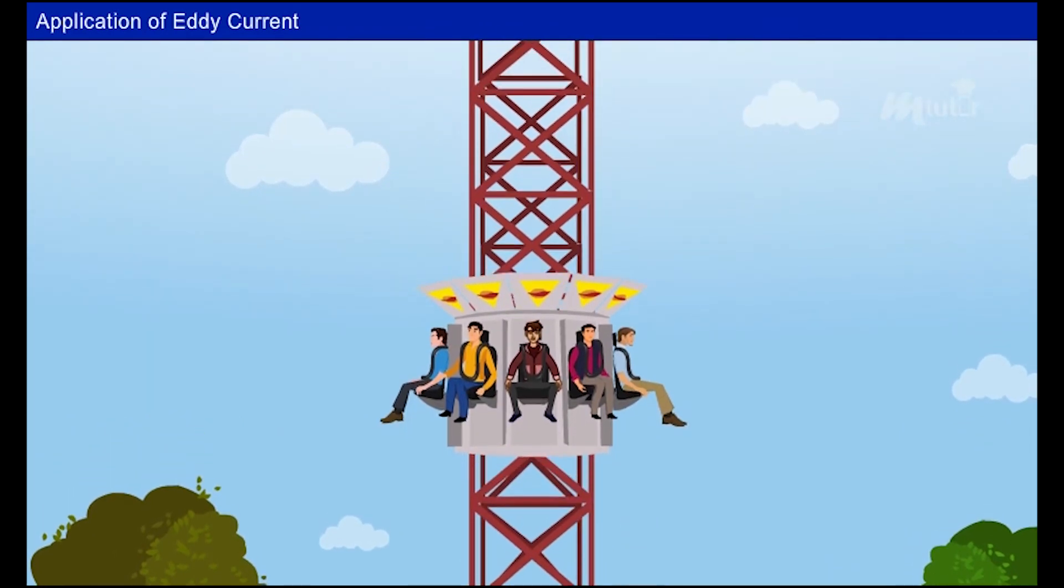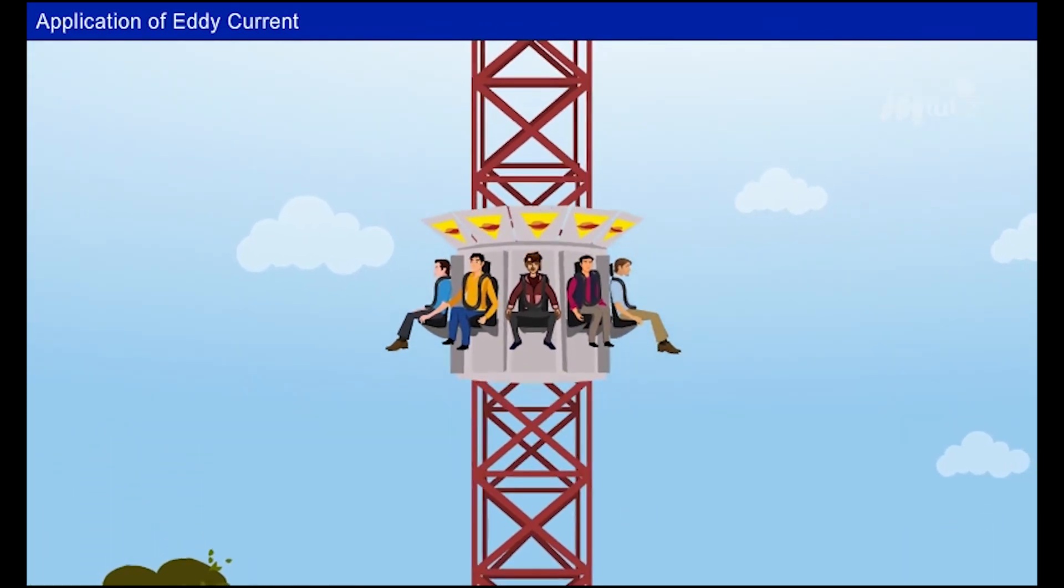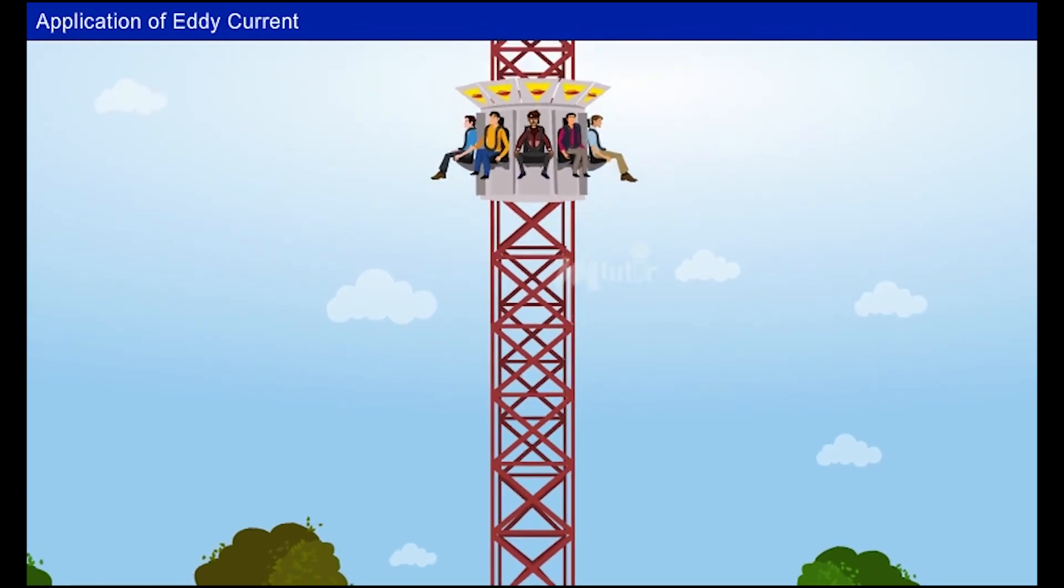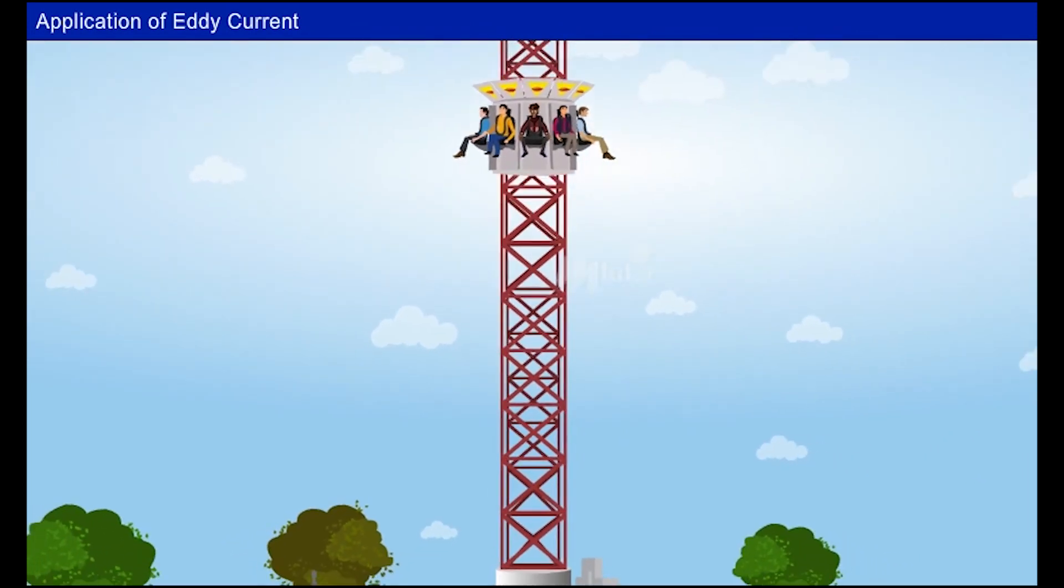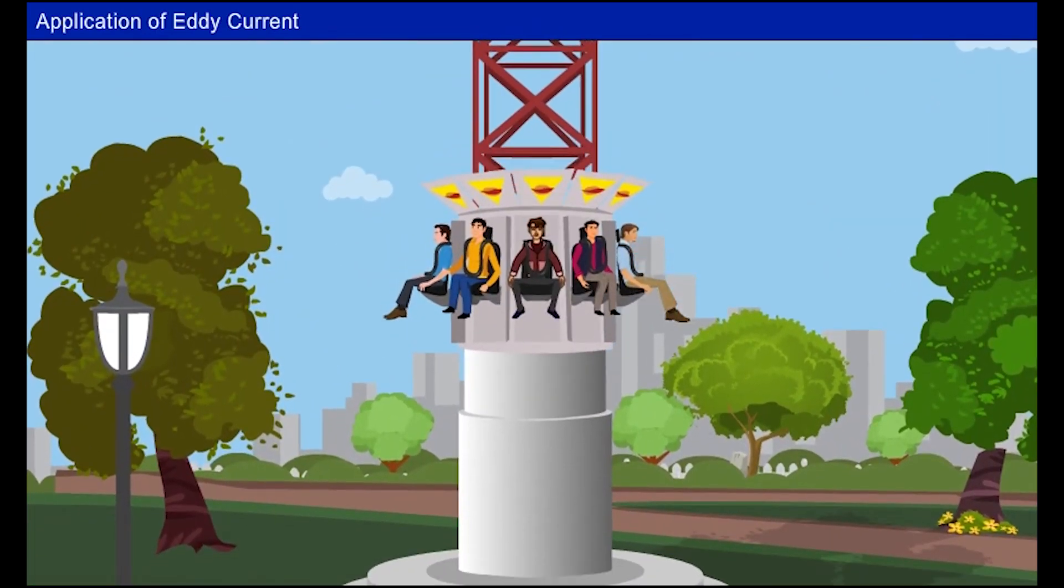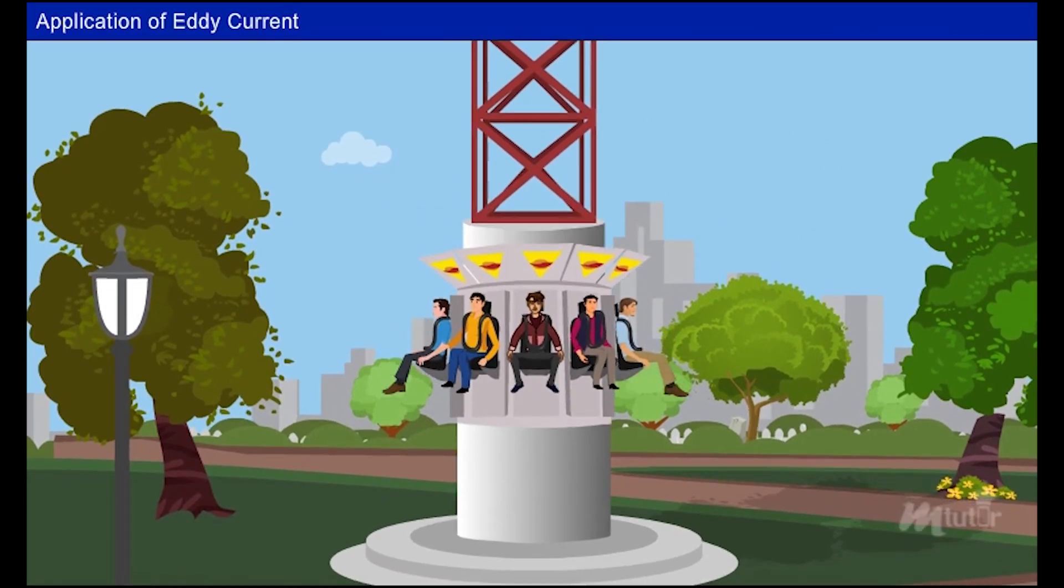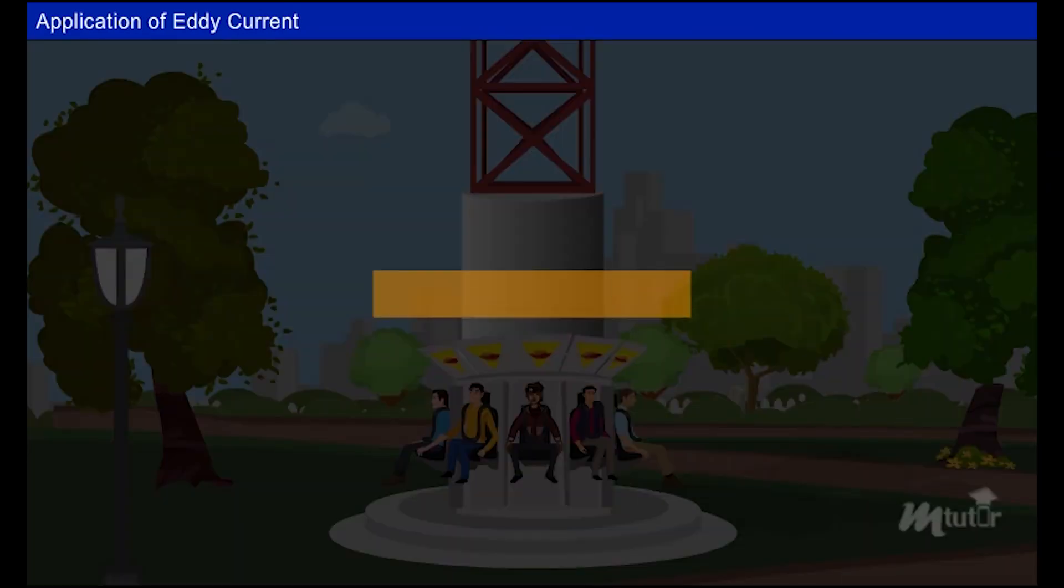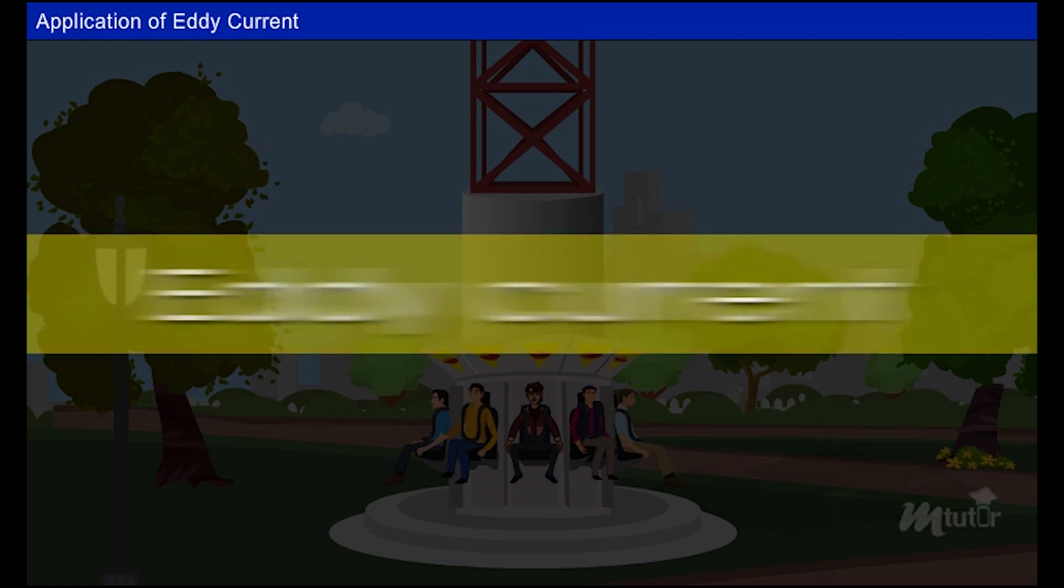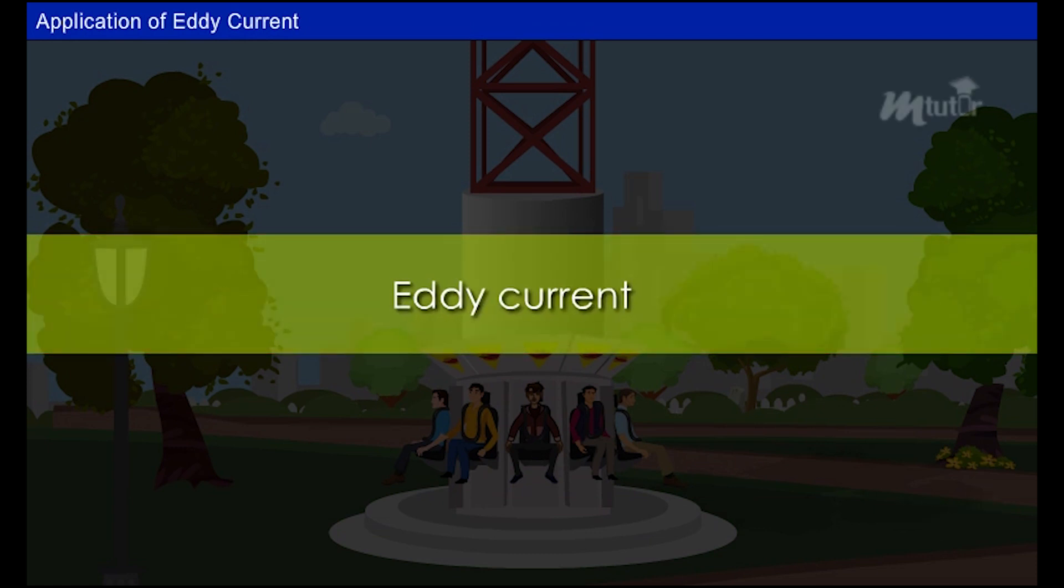Once the people occupy the seats in the ride, the gondola will rise to the top of the tower and then free fall till the ground. But just before reaching the ground, it slows down and stops. What makes it to decelerate and finally stop? It's the eddy current induced in the tower.